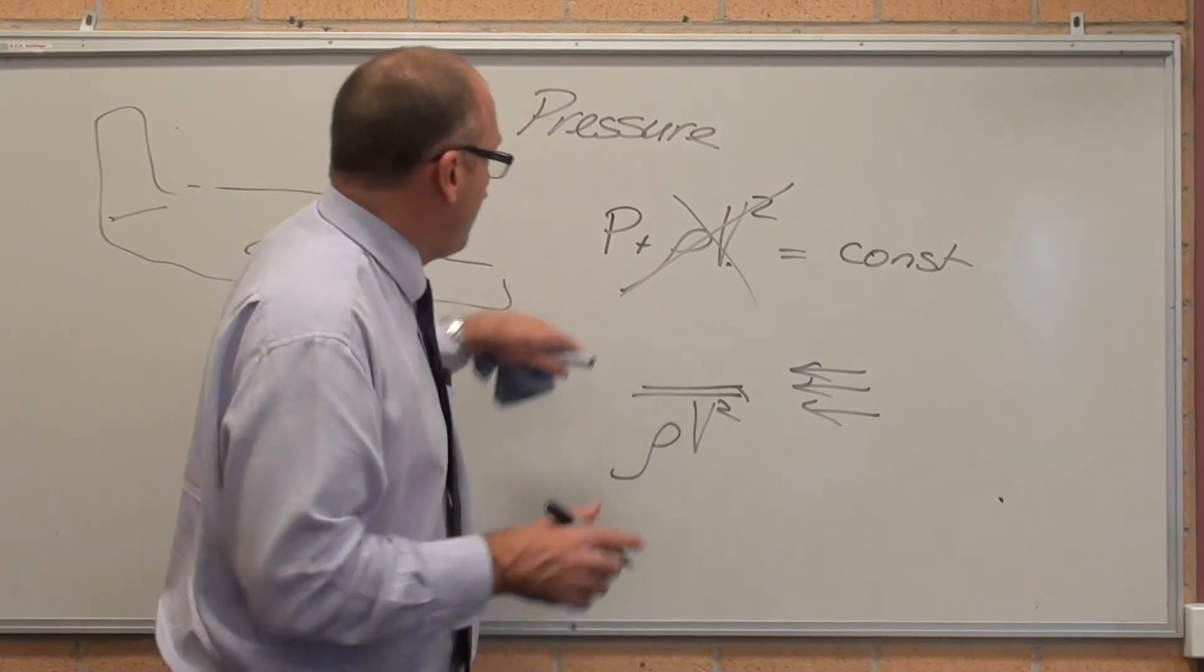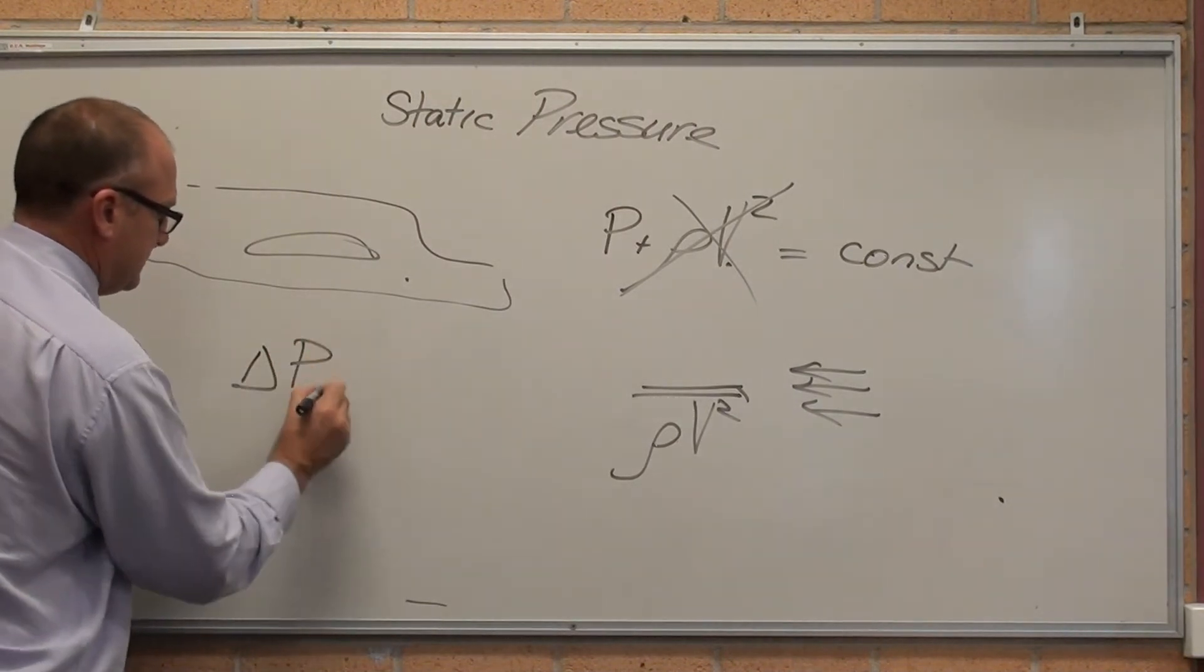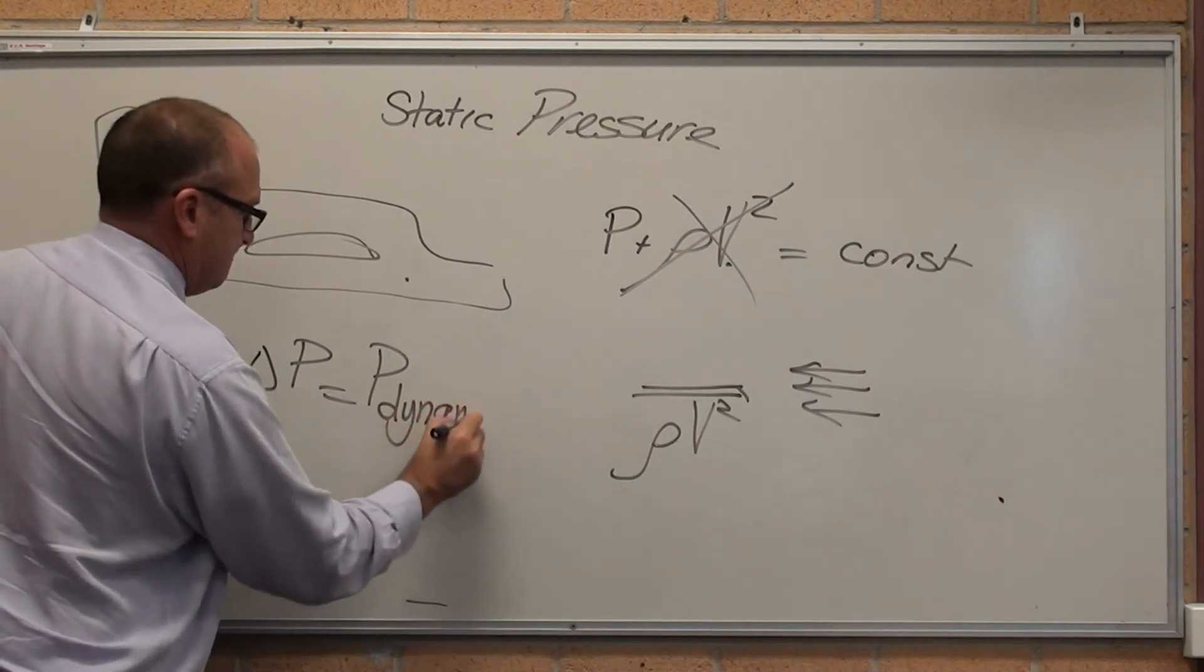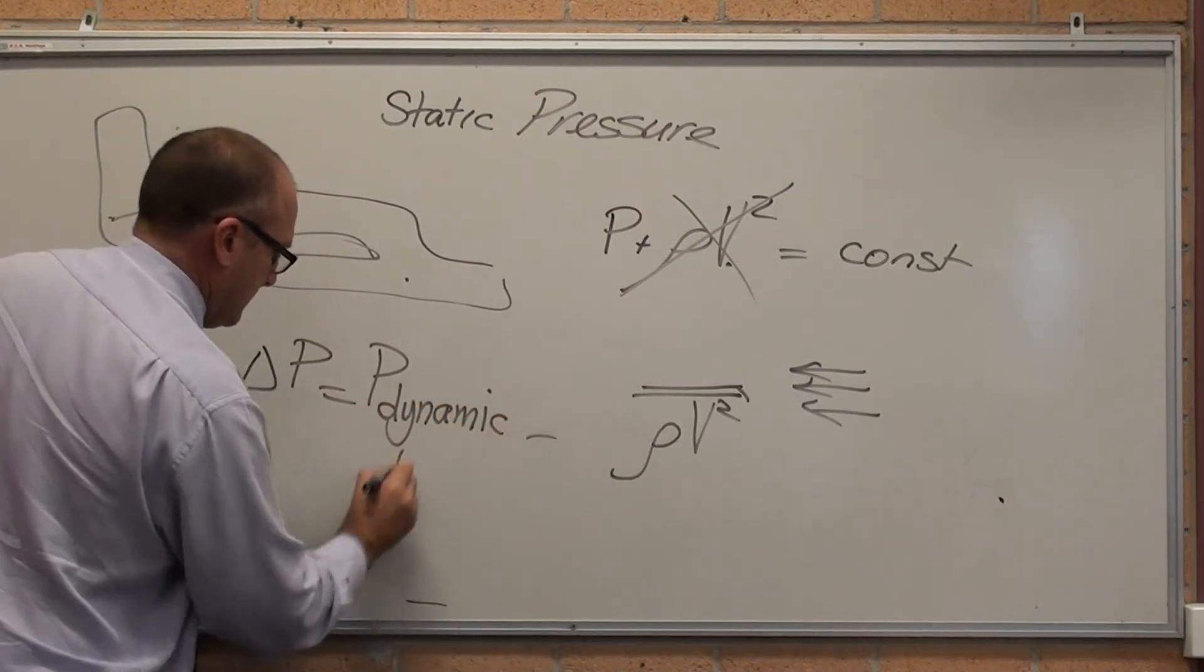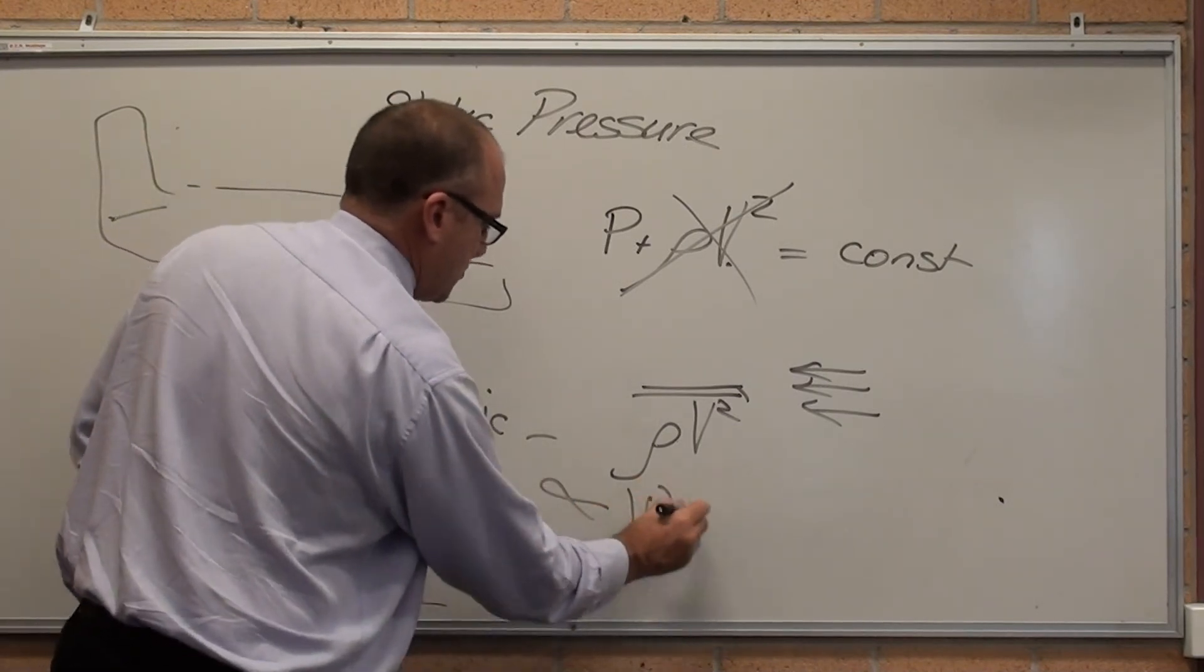All you need to know is that pressure difference, the difference between the dynamic and the static, is proportional to the velocity squared.